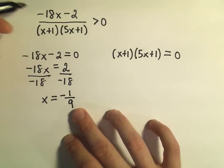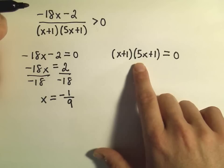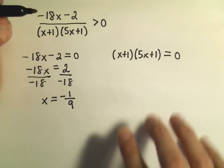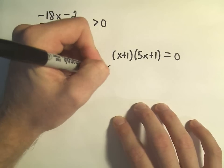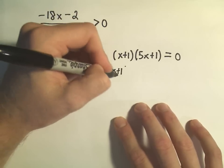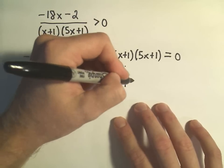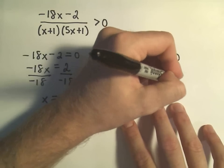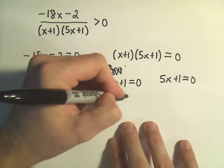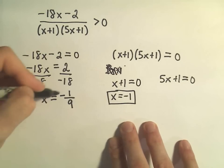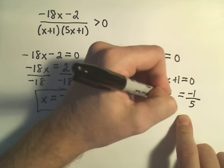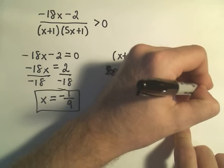I don't multiply out the denominators because if I did, I would have to turn around and factor them to solve the equation. So by leaving them not multiplied, I'm saving myself a step. We can just say x plus 1 has to be 0, so x equals negative 1. And 5x plus 1 would have to be 0, so if we subtract 1 and divide by 5, we get x equals negative 1 fifth.